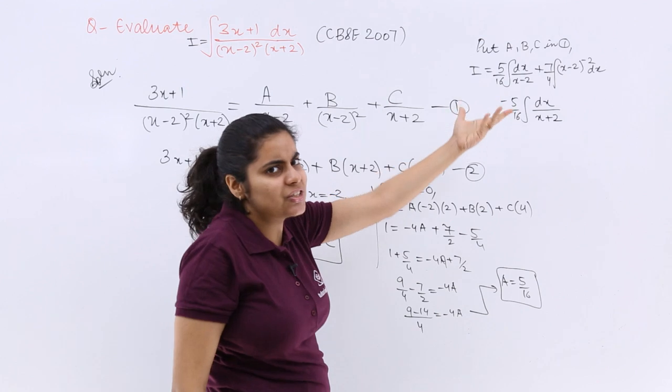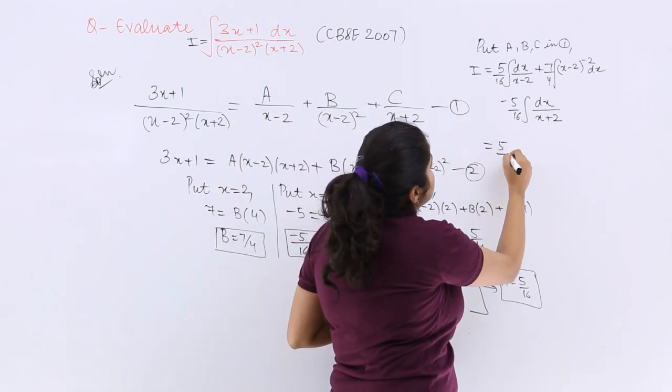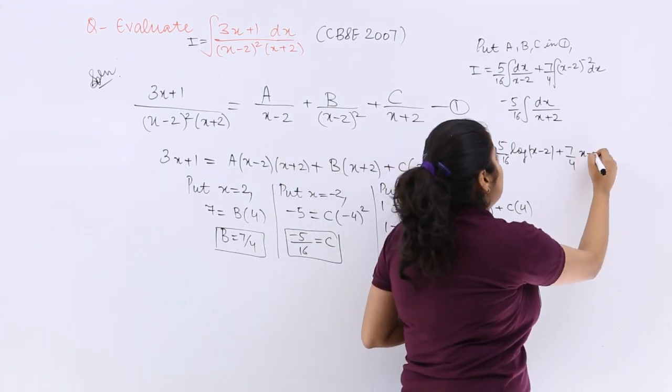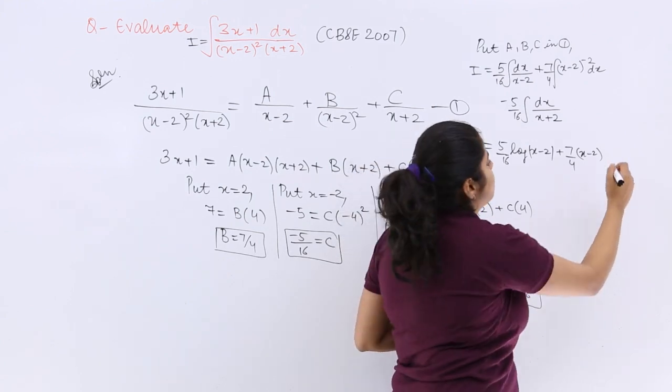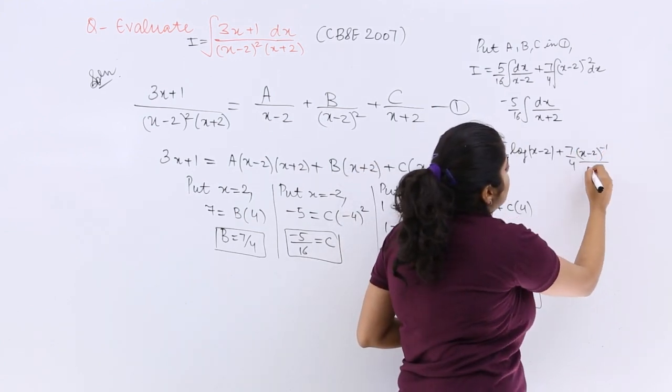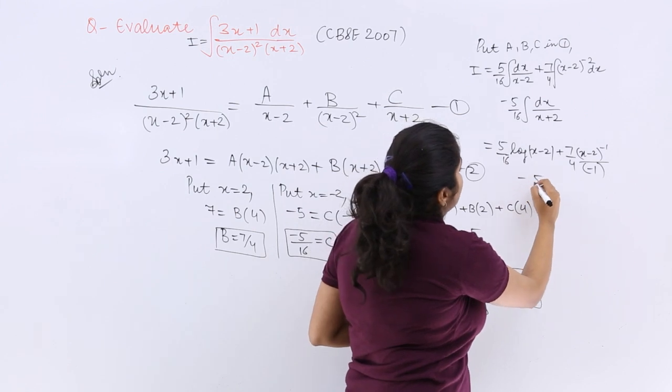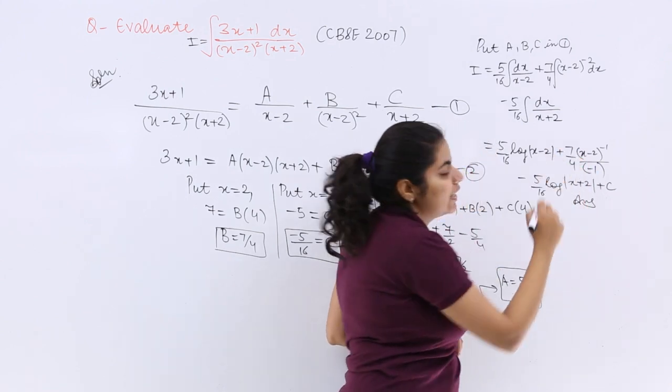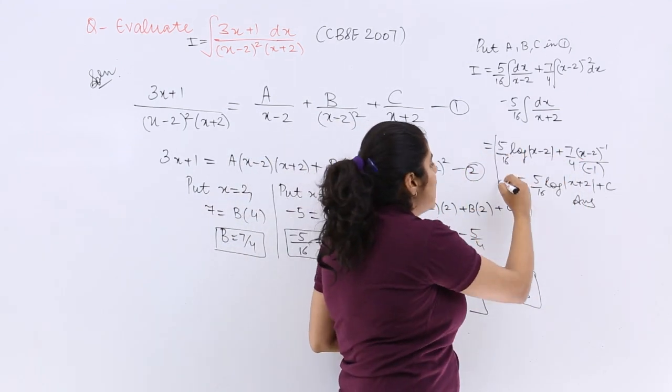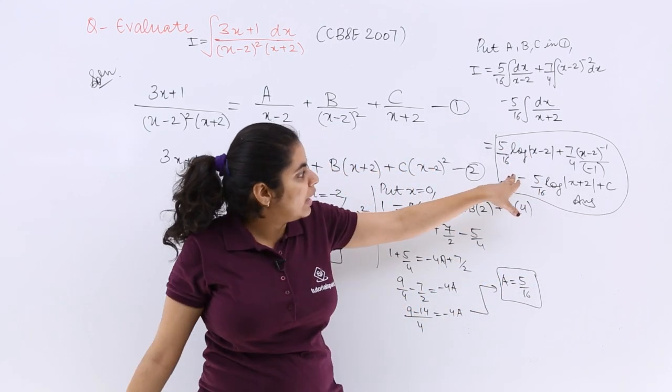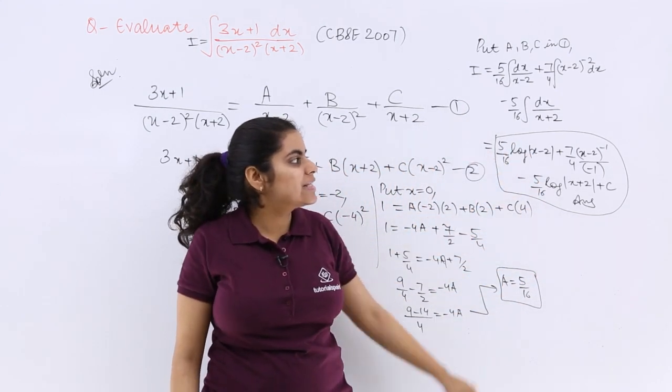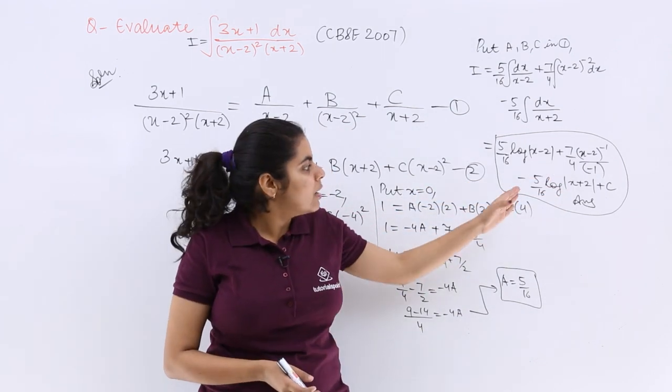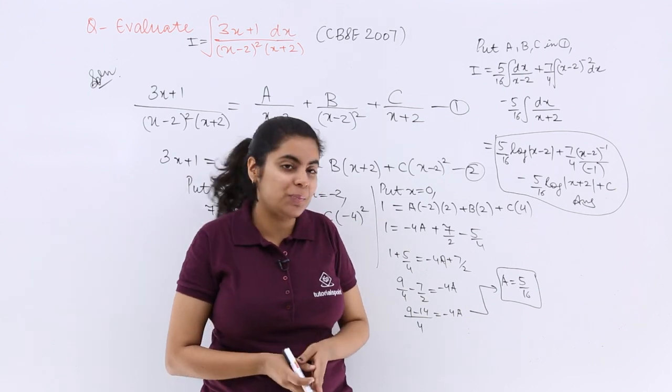Now simply integration, last 1 to 2 steps are left. 5 upon 16 log (x minus 2) plus 7 upon 4 times (x minus 2) raised to the power minus 2 plus 1, so minus 1 upon minus 1, minus 5 upon 16 log (x plus 2) plus the constant of integration which is C. So what is the answer? The answer is what is written in the box: it is 5 upon 16 log (x minus 2) plus 7 upon 4 (x minus 2) raised to the power minus 1 upon minus 1, minus 5 upon 16 log (x plus 2) plus C.